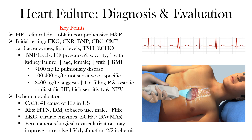To summarize the BNP ranges: a BNP less than 100 in a patient with dyspnea most likely suggests pulmonary disease. If it's over 100, this suggests an increase in LV filling pressure and systolic or diastolic heart failure. Values between 100 and 400 are not sensitive or specific, so further evaluation is needed.